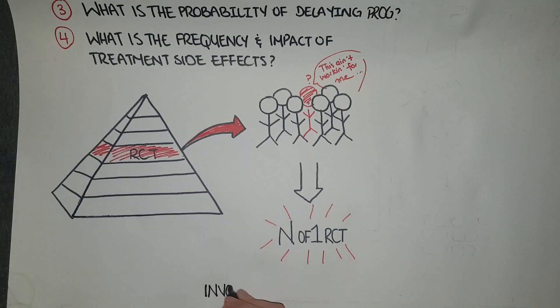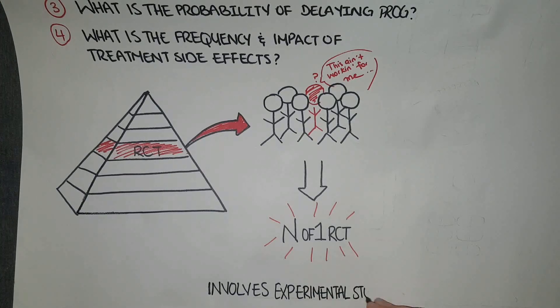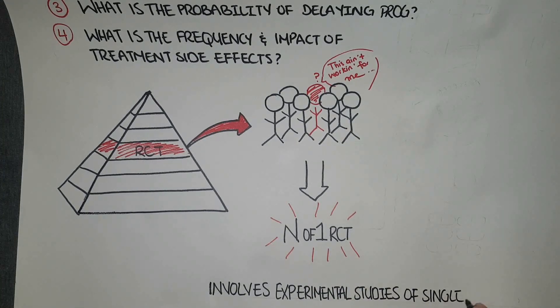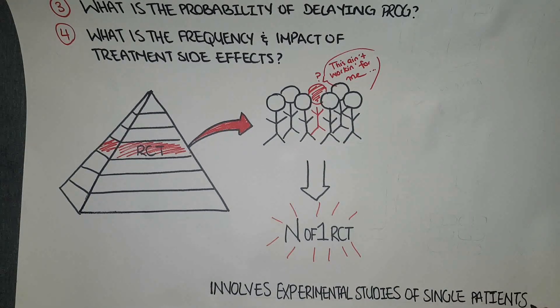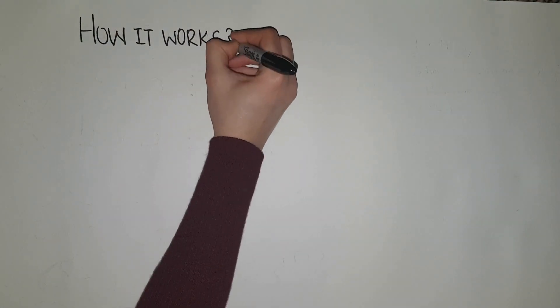The N-of-1 RCT, also known as single case or single subject research, involves experimental studies of single patients. It is similar to a case crossover study. Let's take a few minutes to talk about how N-of-1 RCTs work.